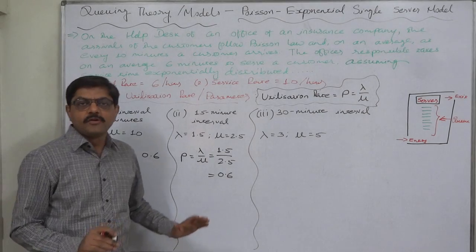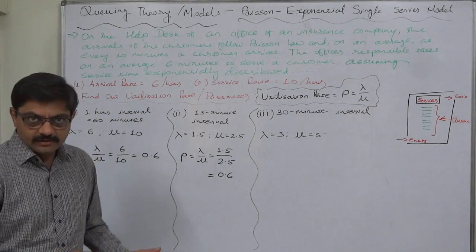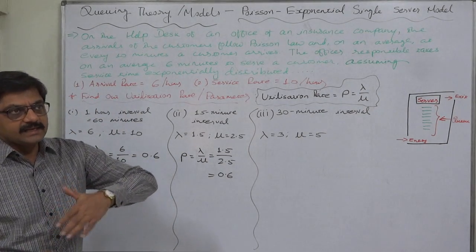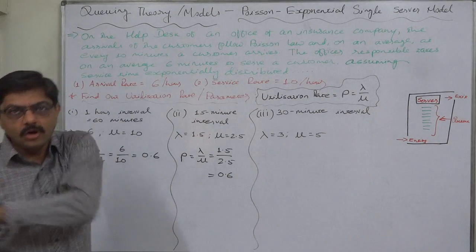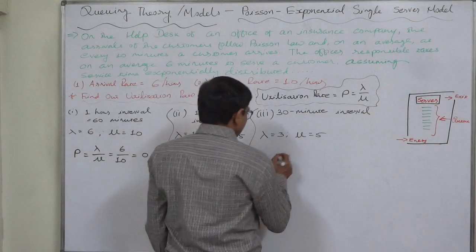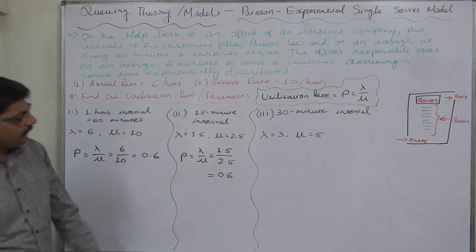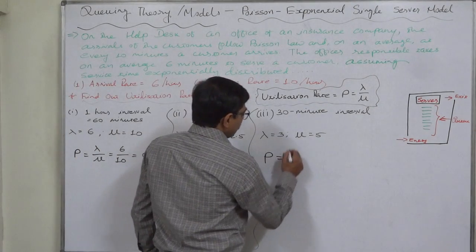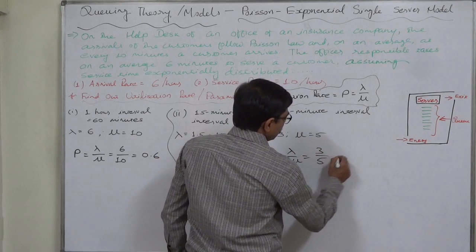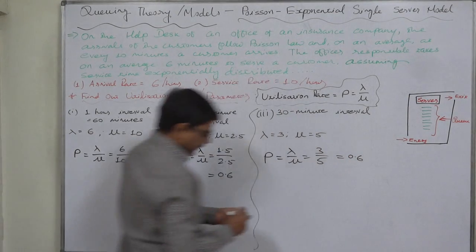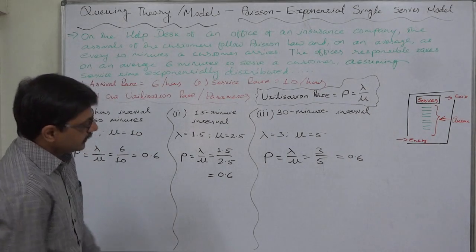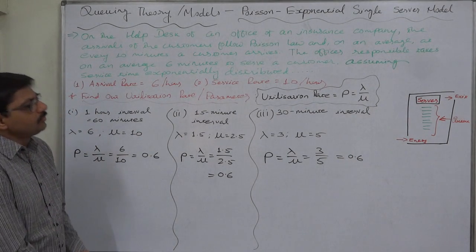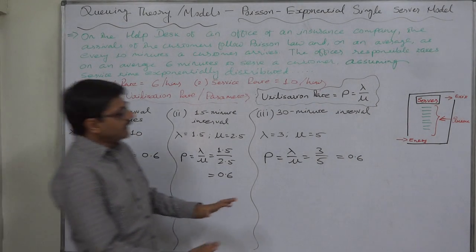Similarly, in case of an interval of half an hour or 30 minutes, rho will be again lambda by mu, equals to 3 by 5, so it is 0.6. As a student, you just need to be clear that even if the time unit or unit of time measurement changes, there will be no change in utilization rate.